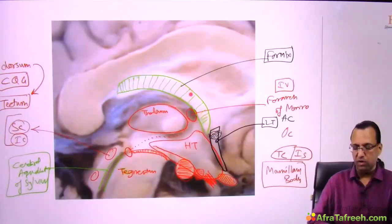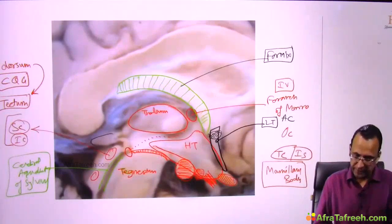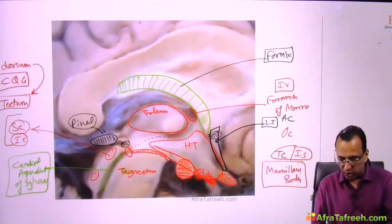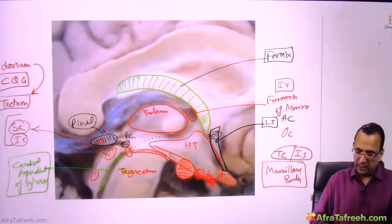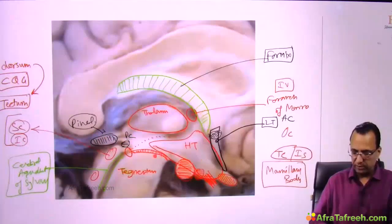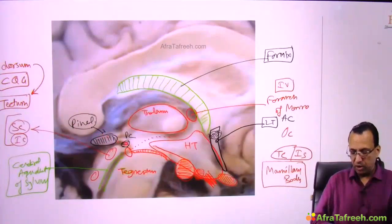The posterior boundary of the third ventricle is the pineal gland. Along with the pineal gland there is also the posterior commissure. The pineal gland and the posterior commissure are the posterior boundary of the third ventricle. So the third ventricle is bounded: foramen of Monroe anterosuperiorly, pineal gland and posterior commissure posteriorly. Let us now make a diagram for the boundaries of the third ventricle.